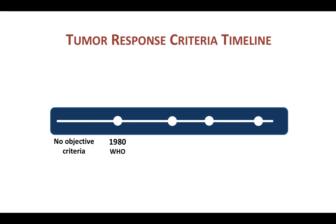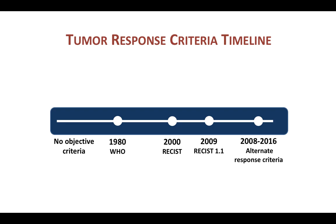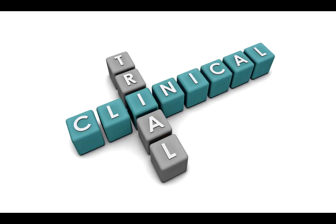The first tumor response criteria, the WHO criteria, were introduced in 1980, but the major shift was the RECIST criteria introduced in 2000 in the post-CT era, followed by RECIST 1.1 in 2009. In the last decade, with the plethora of immunotherapy and targeted therapy options, we also have a number of alternate response criteria. The latter two form the workhorse of most clinical trials and this is where RECIST is really commonly used in the clinical trial setting.